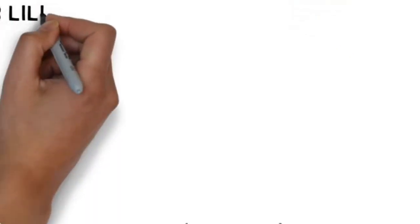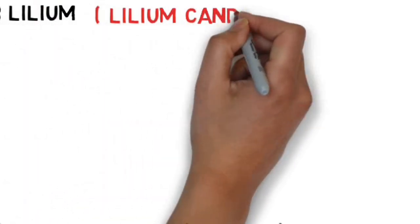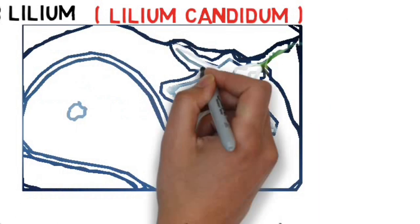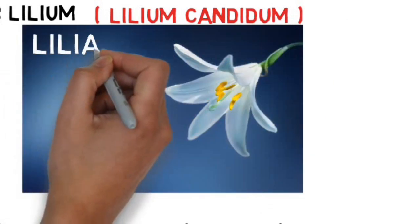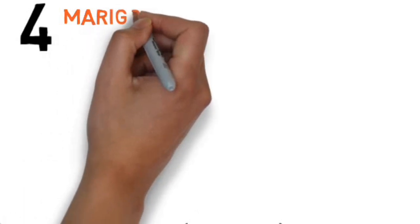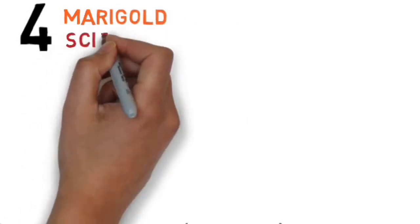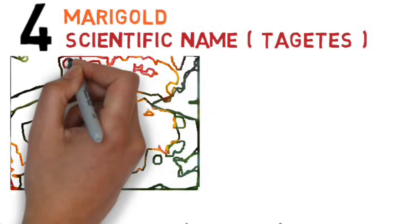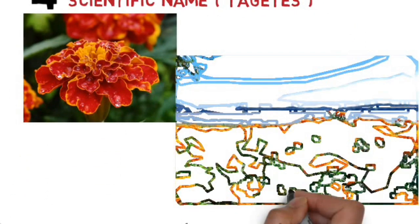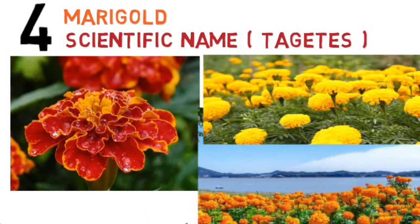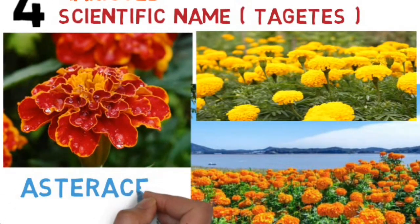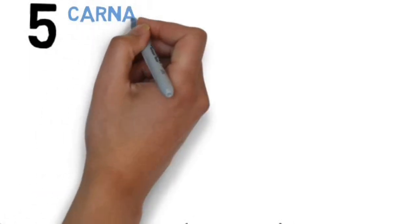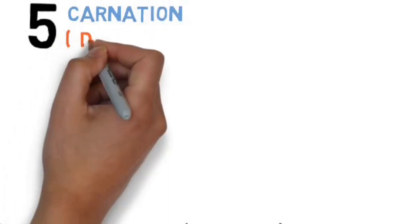Next is lilium. Its scientific name is Lilium candidum and it belongs to the family Liliaceae. Next one is marigold. Its scientific name is Tagetes and these are some flowers of marigold. It belongs to the family Asteraceae.